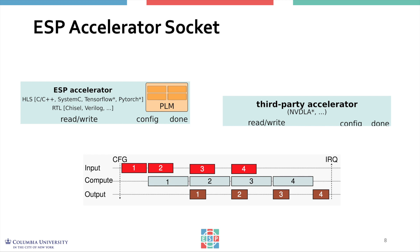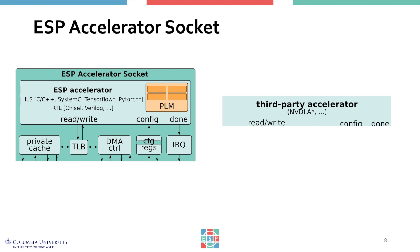Thanks to the ESP services, the accelerator socket relieves the designer from the burden of reinventing the wheel every time, with respect to configuration through memory-mapped registers, virtual memory and DMA, data transfers from the PLM, caches or main memory, and the interrupt request for interaction with the processor cores.